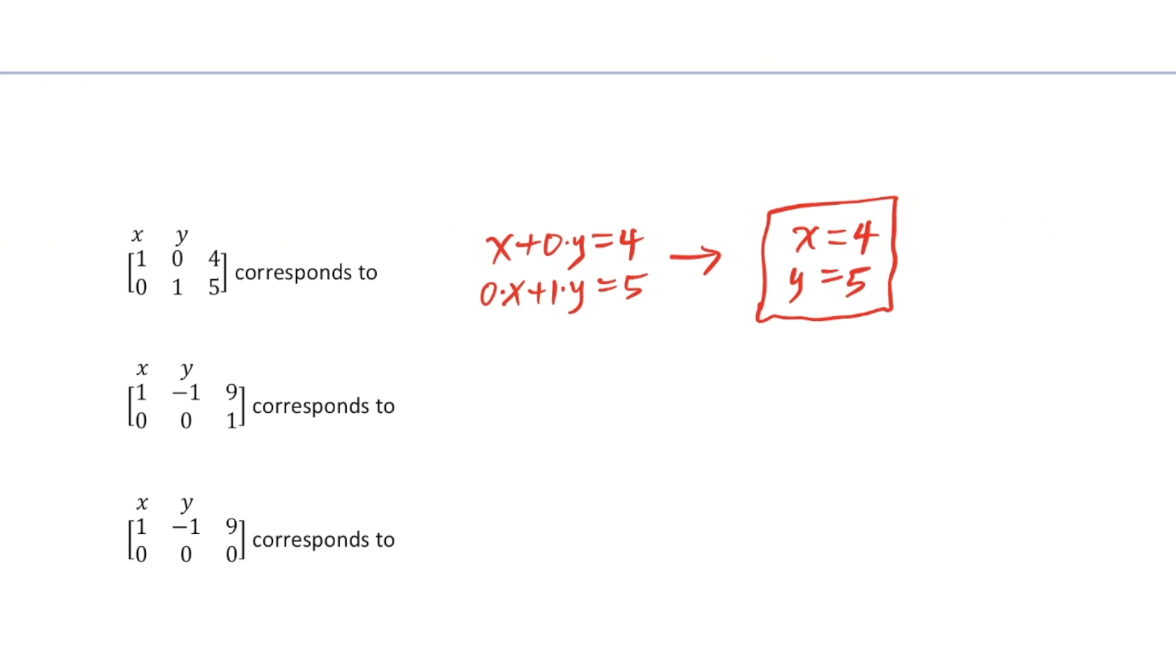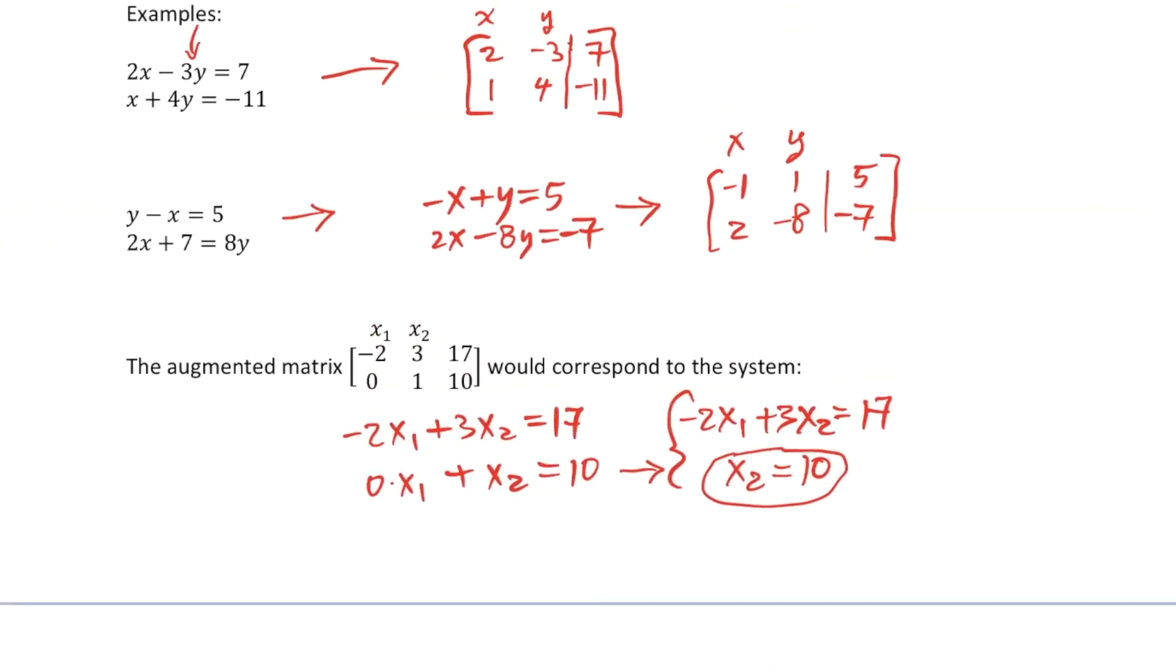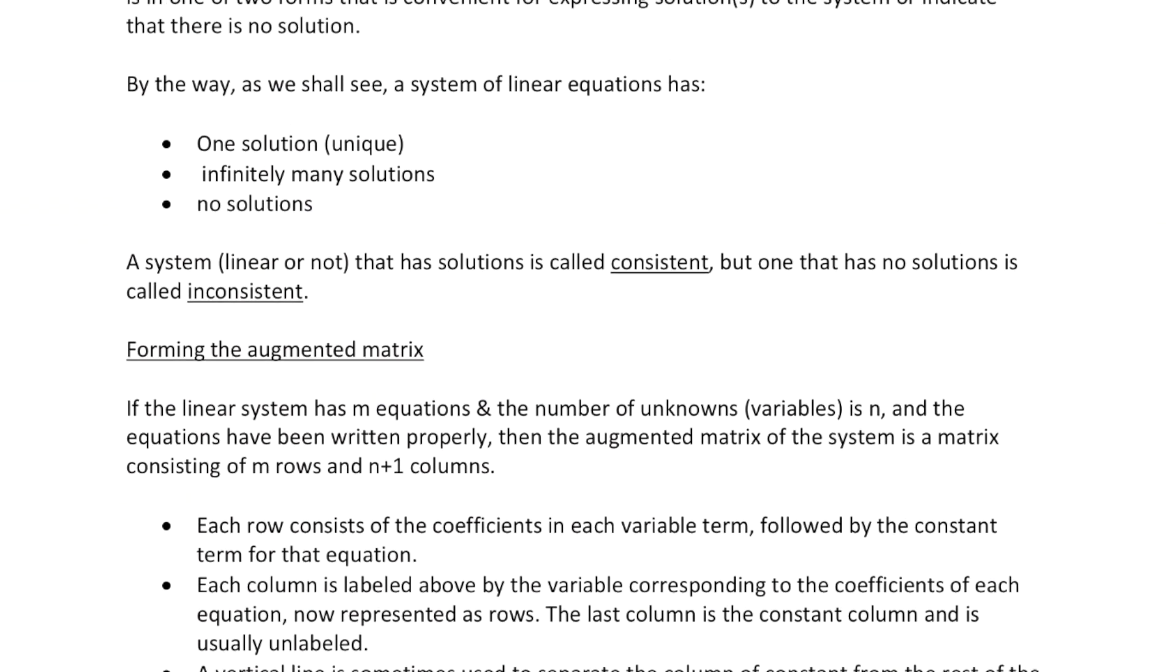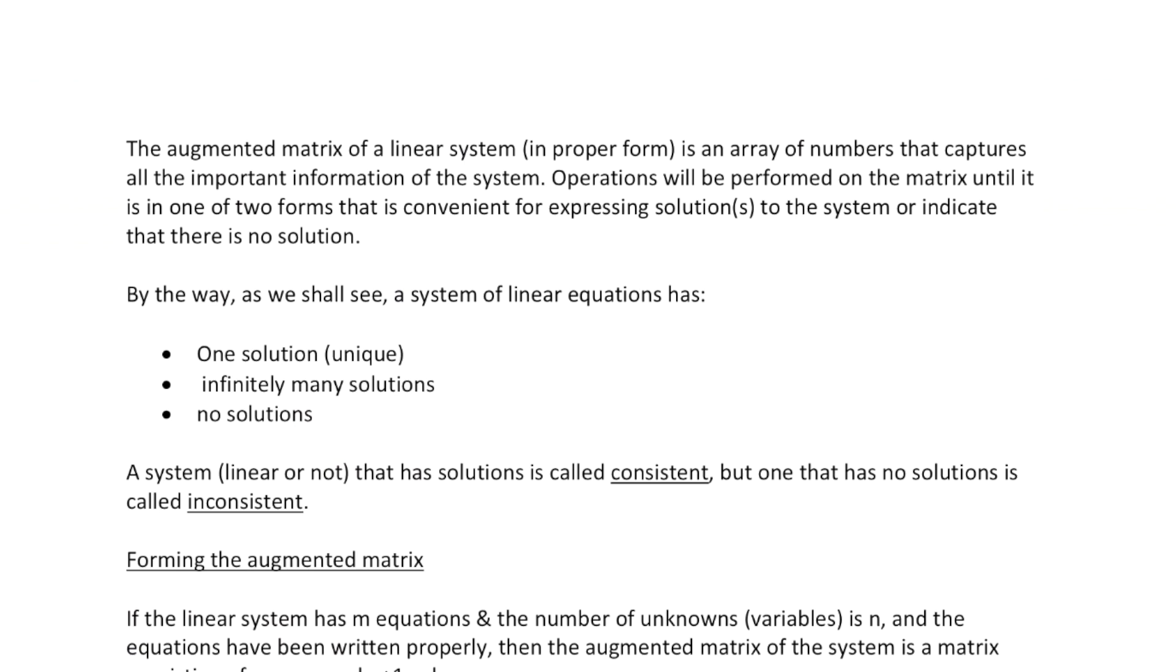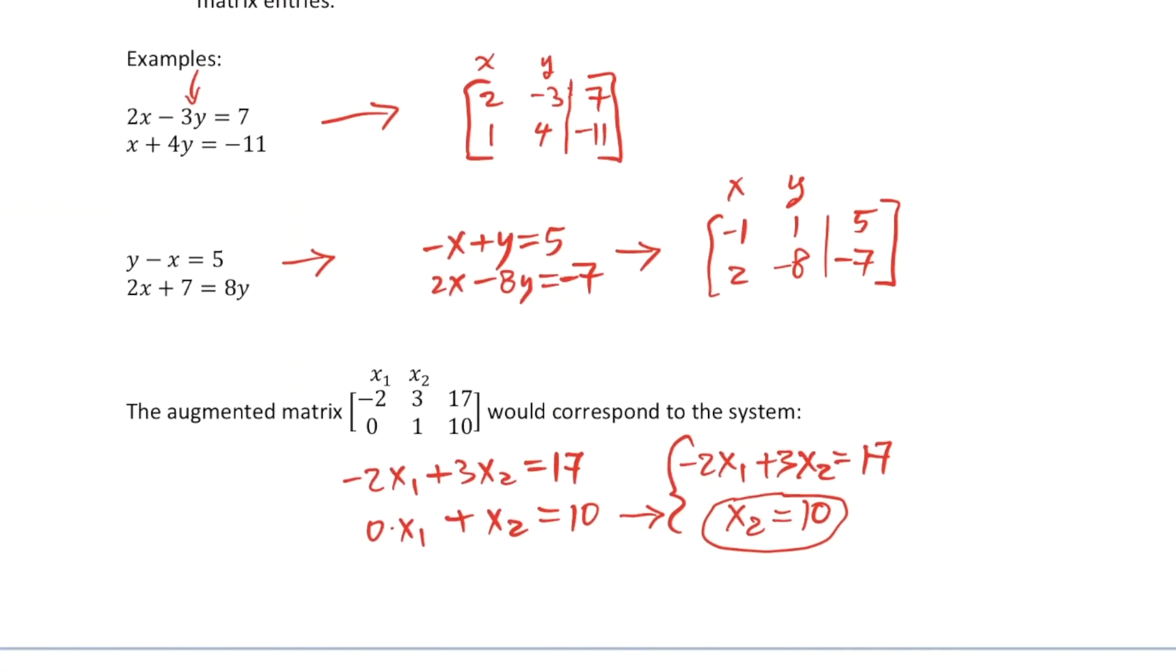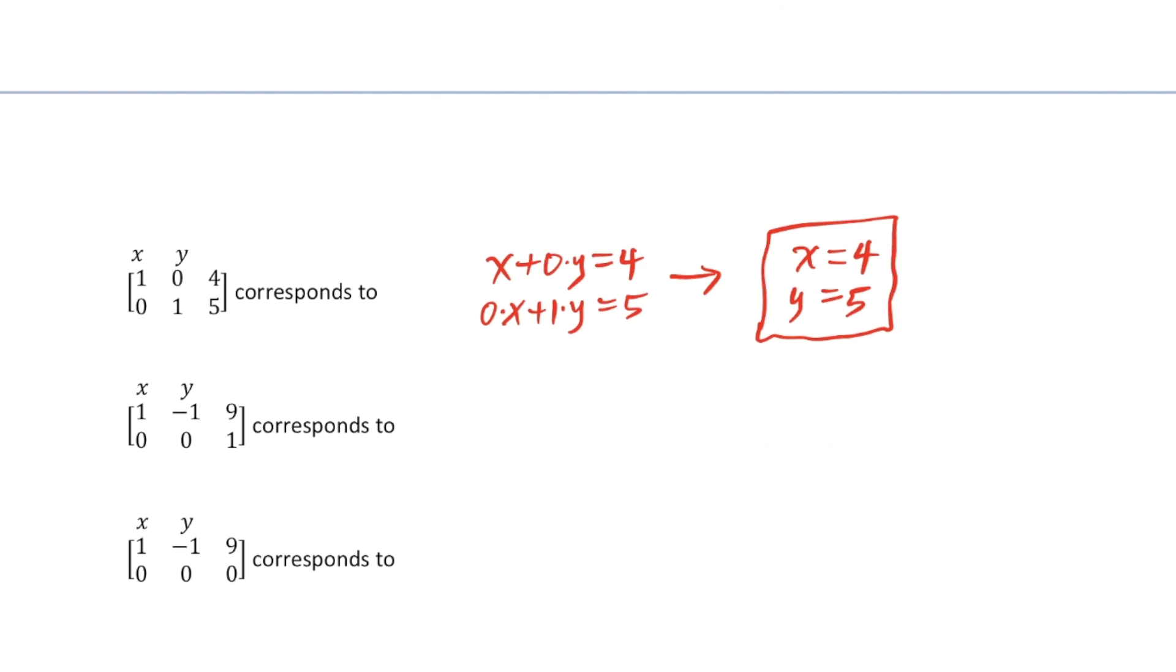Now I said earlier what we're going to be doing is performing operations on our augmented matrix to try to get it into one of two forms where it's going to be easy to express the solution or solutions or indicate that there is no solution. And we'll talk about that later. You could see this is definitely a convenient form for reading off answers to our system here.